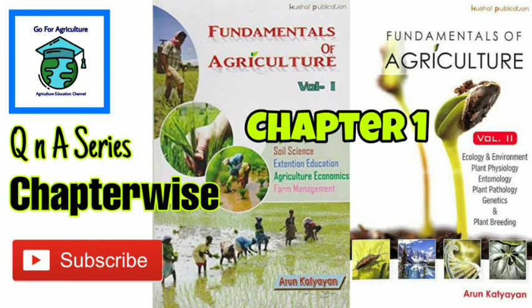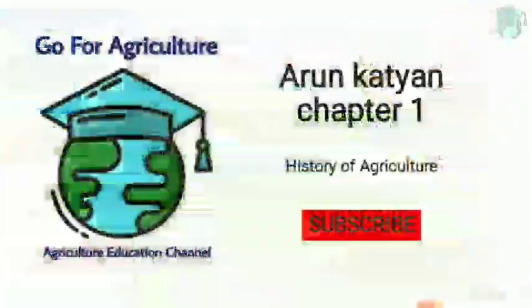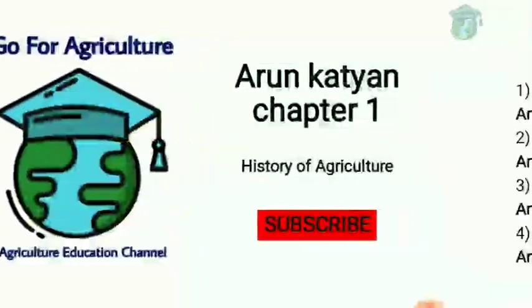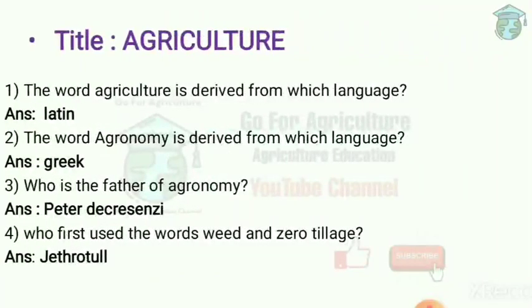In this lecture we will discuss Arun Katyan Chapter 1, History of Agriculture. The word agriculture is derived from which language? It comes from 2 Latin words: Agar means soil.